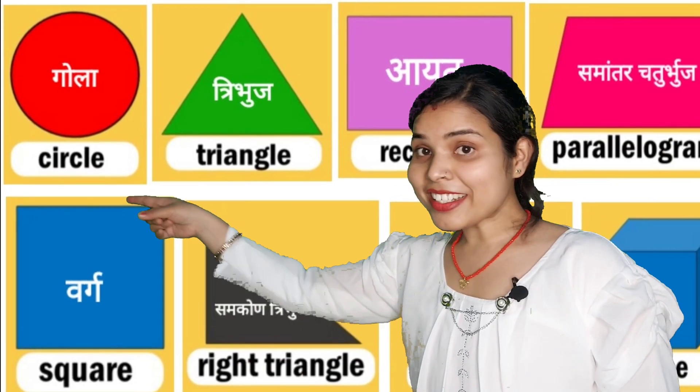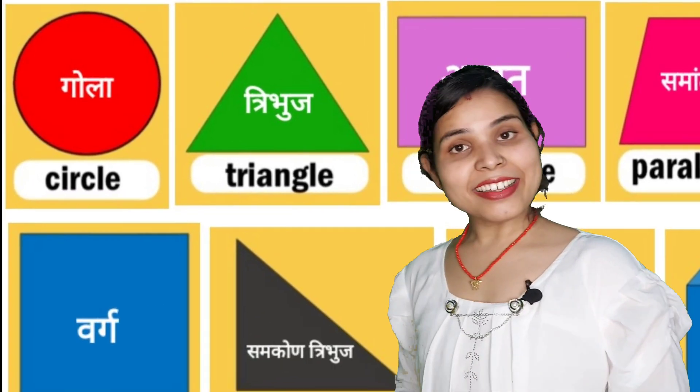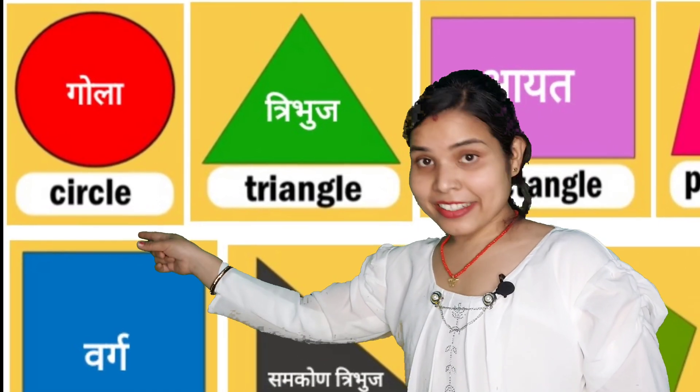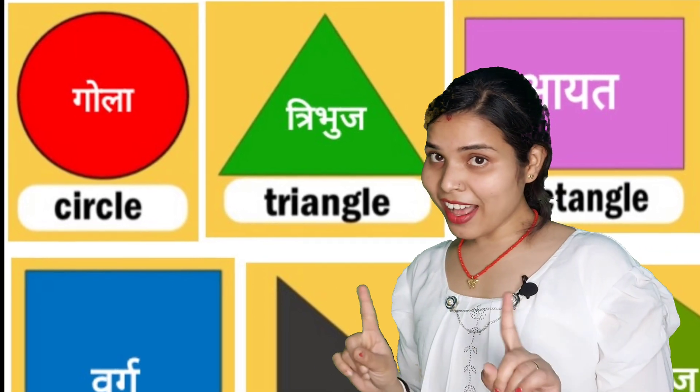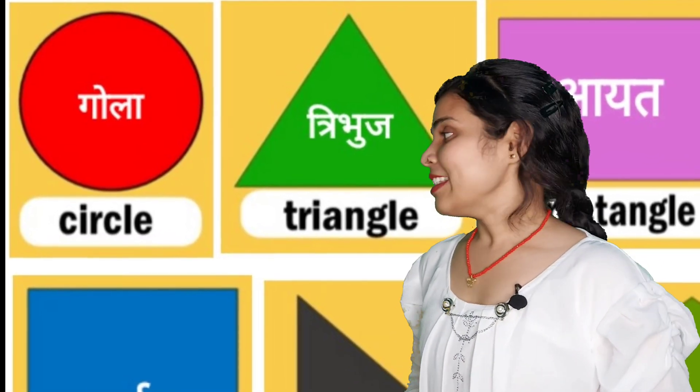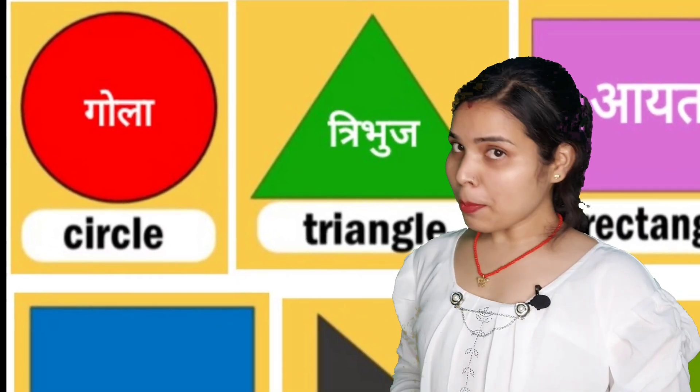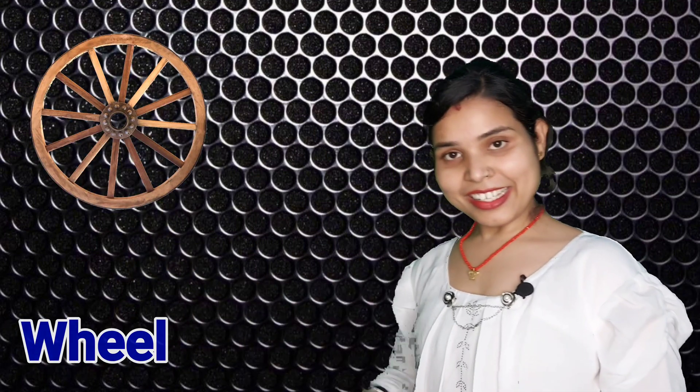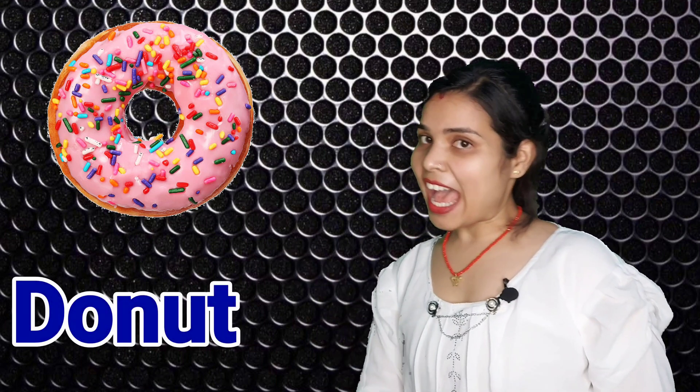Look here children, this is a circle. A circle has no side. Children, the shape of circle like sun, clock, wheel, yummy pizza, doughnuts and coin. Remember children, these are all example of circle shape.